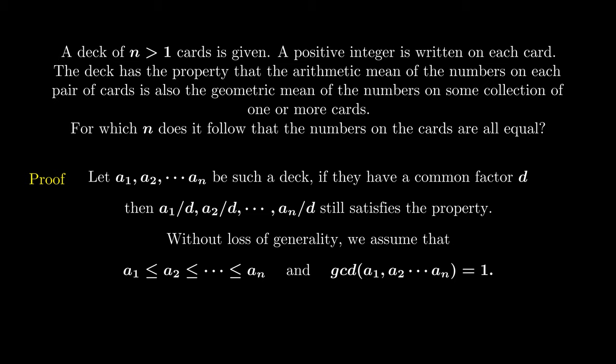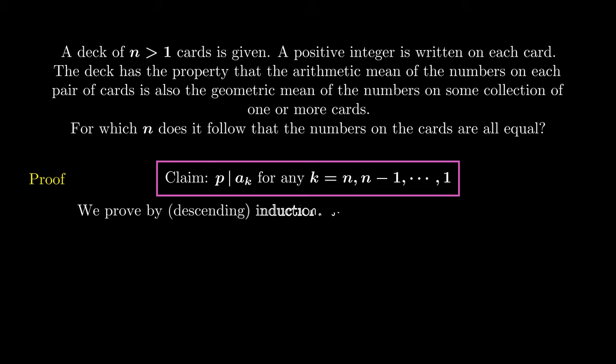Now, if the numbers are not all equal, then an must be larger than 1. And we take a prime divisor p of an. The claim is that p divides all the elements ak. And we prove it by descending induction. The initialization at k equals n is obviously true by definition. So, let's assume that k is true and consider k-1.